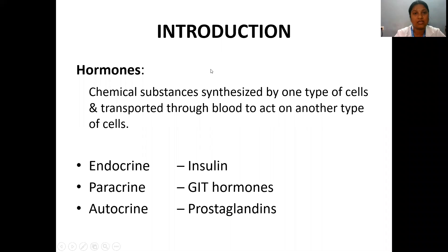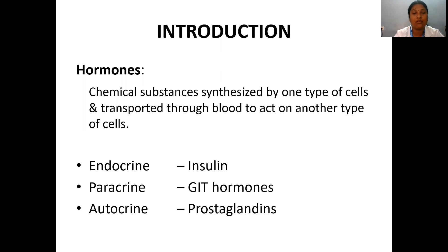Moving on to mechanism, we will see what hormones are. Hormones are basically chemical substances which are synthesized by one type of cells, transported through the bloodstream, and act on another type of cells. We have different chemical substances synthesized in our body, and the mechanism of their action can be divided into three main categories.